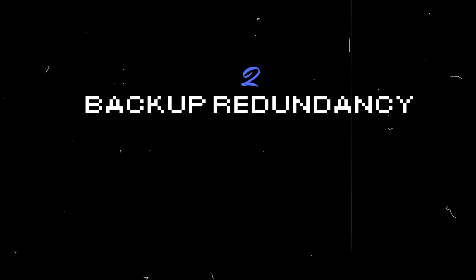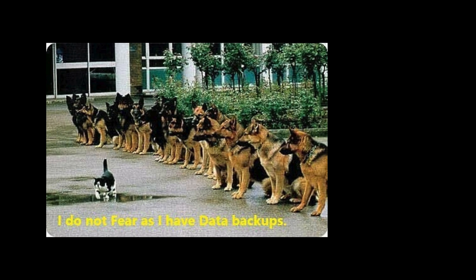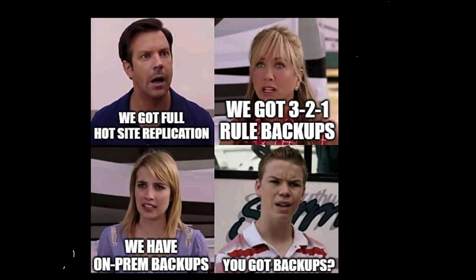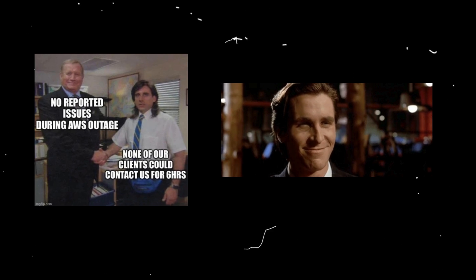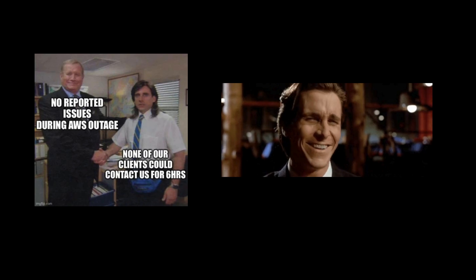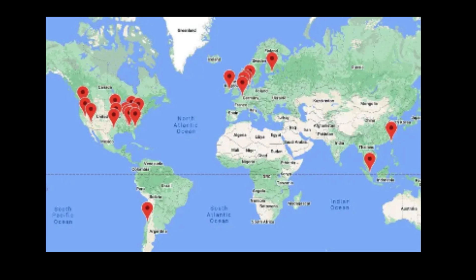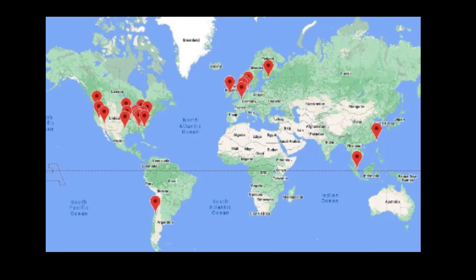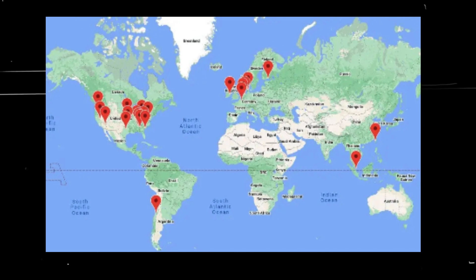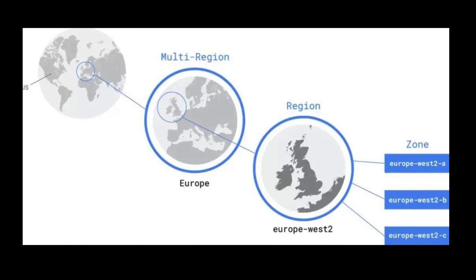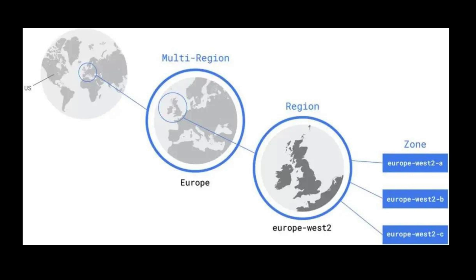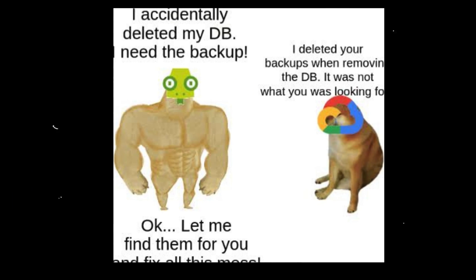Backup redundancy involves maintaining duplicates or backups to safeguard against data loss. Geographic redundancy takes this concept further by storing copies of data in different physical locations — a contingency plan for scenarios where one location experiences a natural disaster, power outage, or other issues. UniSuper had geographic redundancy in place with backups in two separate locations. However, the misconfiguration that erased their account simultaneously impacted both locations, rendering their backup system ineffective.